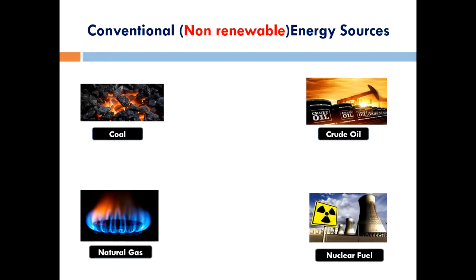Another conventional source of energy is nuclear energy. Nuclear energy is made from radioactive elements that undergo nuclear fission reactions to generate energy. Nuclear fuels such as uranium and thorium are needed; uranium is the most popular nuclear fuel used in nuclear power plants. Nuclear power plants need very high protection because the fuel used is highly radioactive and the products formed are harmful to us.